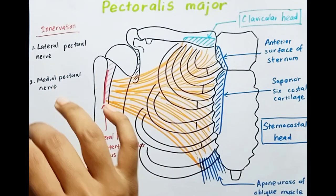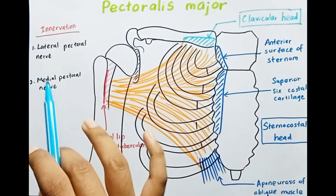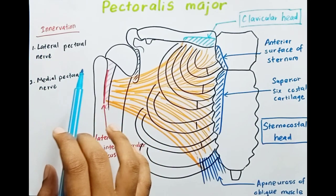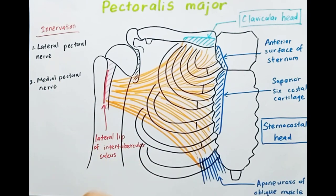The lateral pectoral nerve arises from the lateral cord of the brachial plexus, and it's typically from the roots C5, C6, and C7.